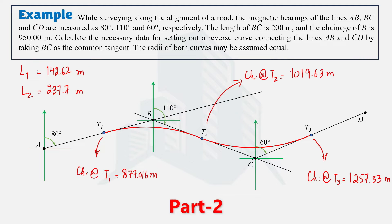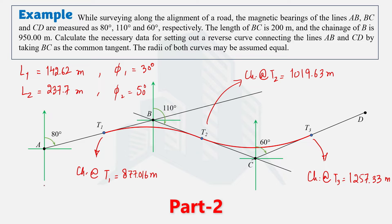Welcome everyone. This is the second part of the solved example related to the reverse curve. In the first part we calculated the basic calculations required to set out the reverse curve, like the length of both curves, deflection angles, and also the chain ages at the key points. Now in this video we are going to set out the reverse curve using the deflection angle method. Since these are simple circular curves, we can use the deflection angle method.